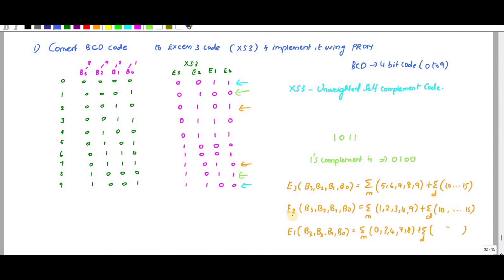Similarly for E2, E1, and E0. E0 is equal to summation M of minterms 0, 1, 2, 3, 4, 5, 6, 8, plus summation D for don't cares 10, 11, 12, 13, 14, and 15.